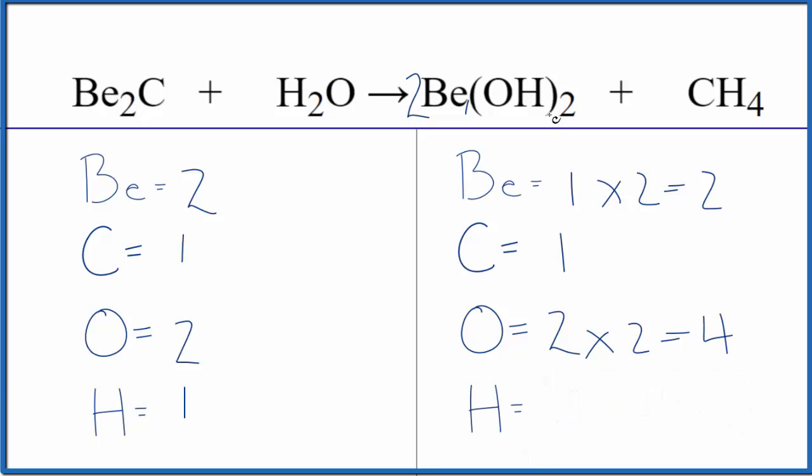And then for the hydrogens let's update this. We have 2×1, that's 2×2, so 4 plus the 4 here, so we have a total of 8 hydrogen atoms. To balance the hydrogens we could just put a 4 in front of the H₂O. 2×4, that's 8. And let's update the oxygens now, we have 4×1, so 4 oxygen atoms.